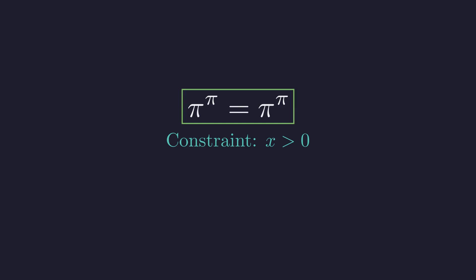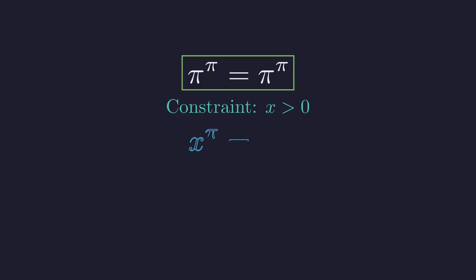But wait, are there other solutions? To find out we need to be careful about our domain. Since π is irrational, raising x to the power of π only makes sense in the real numbers when x is positive. So we're looking for positive values of x. Now here's the challenge: notice that x appears in two places—as a base on the left and as an exponent on the right. That makes this equation tricky to solve directly. We need a mathematical tool that can bring exponents down to where we can work with them. That tool is the natural logarithm.